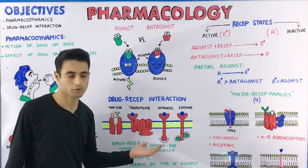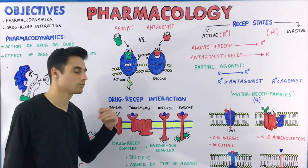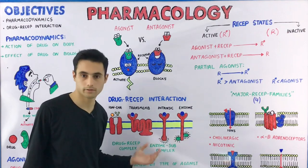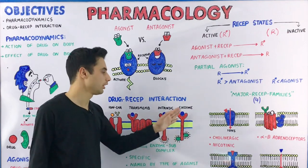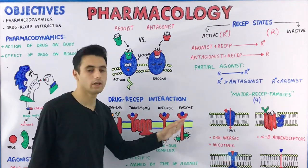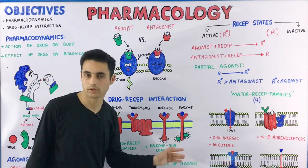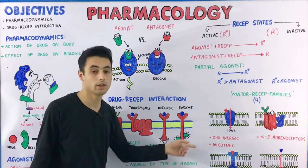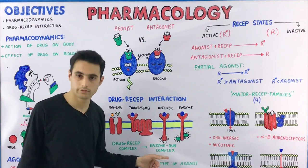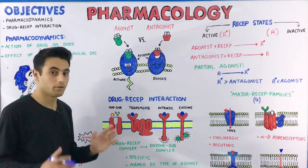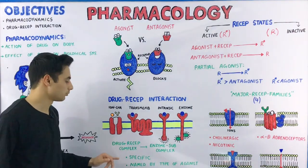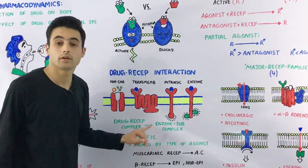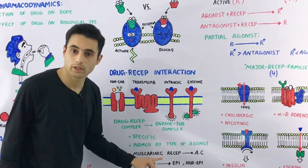Some receptors may be associated with an ion channel — that is why they are known as ion channel-linked receptors. Some receptors are associated or linked with G proteins; these are the transmembrane receptors. Some have intrinsic activity inside the body, and some are linked with an enzyme and perform their activity with the help of enzymes — these are known as enzyme-linked receptors.